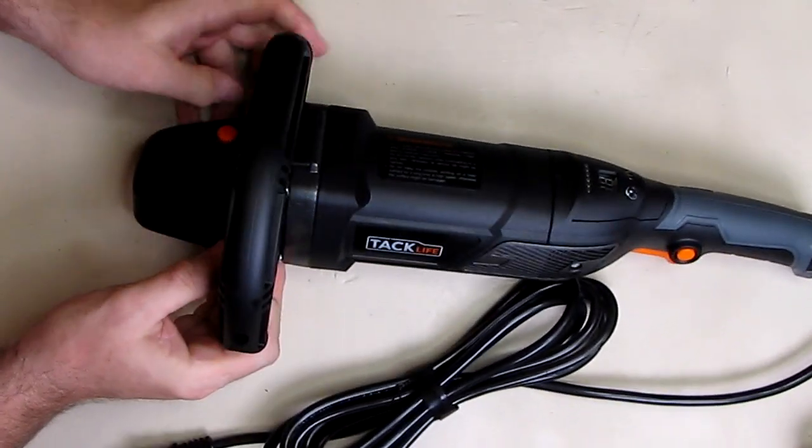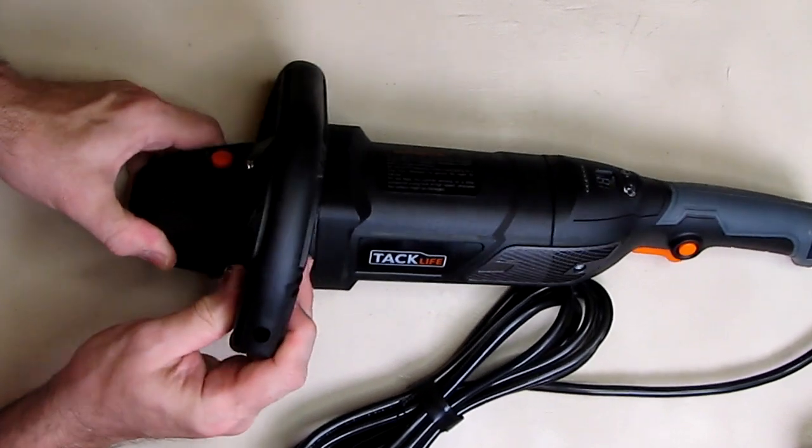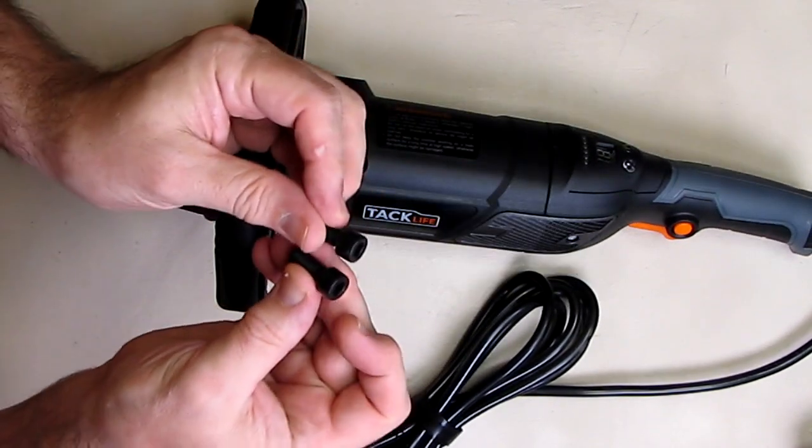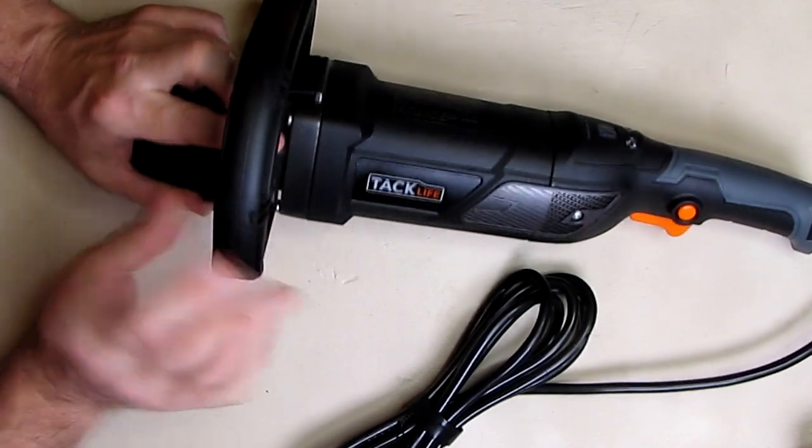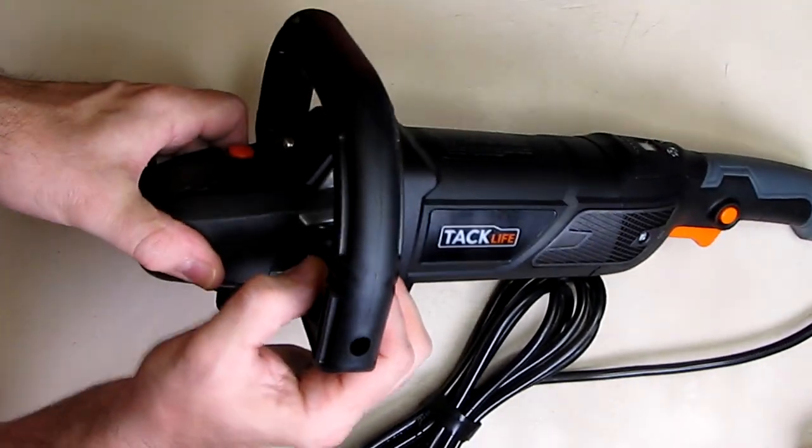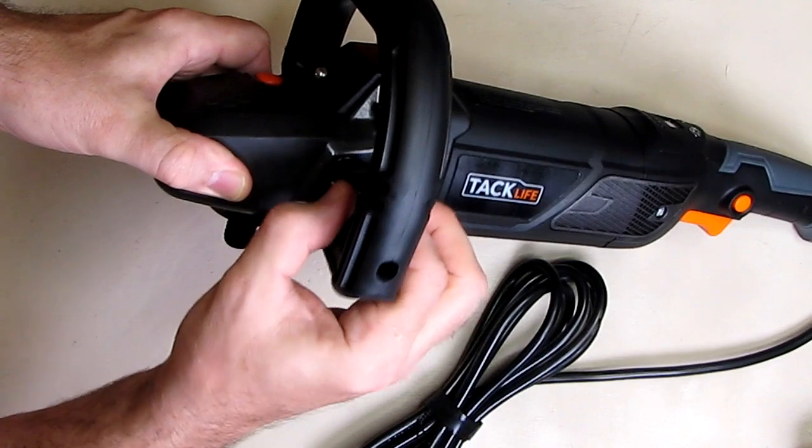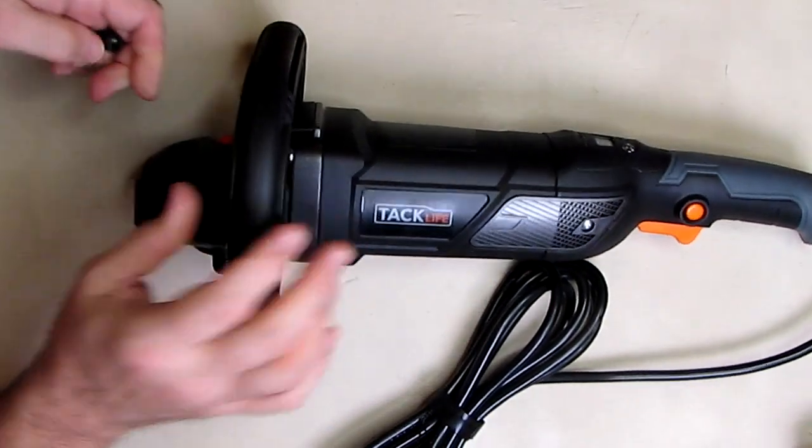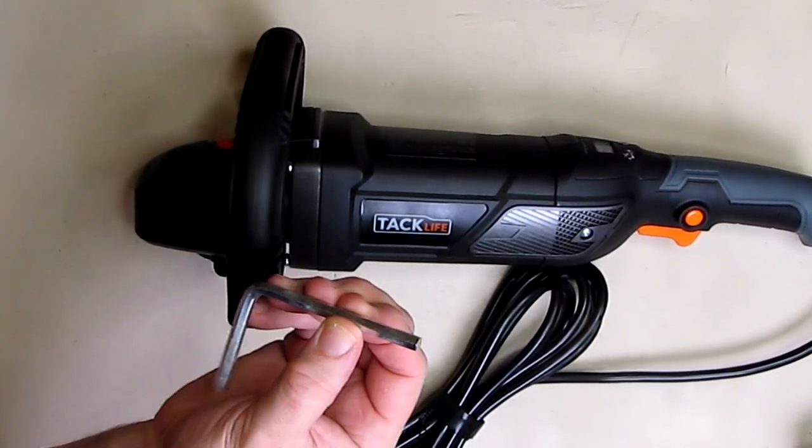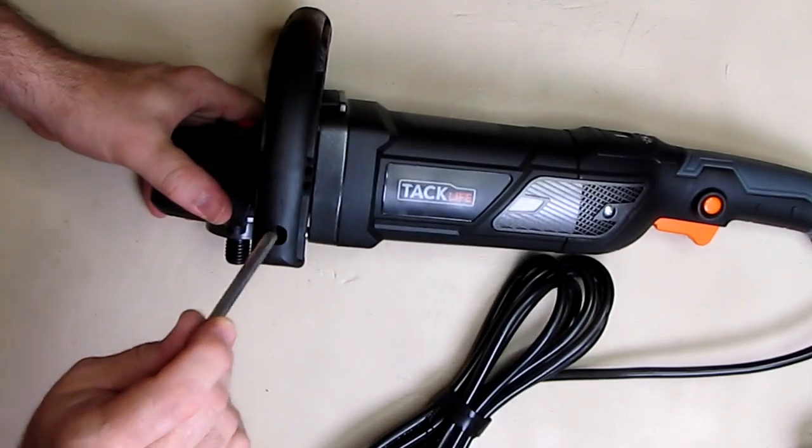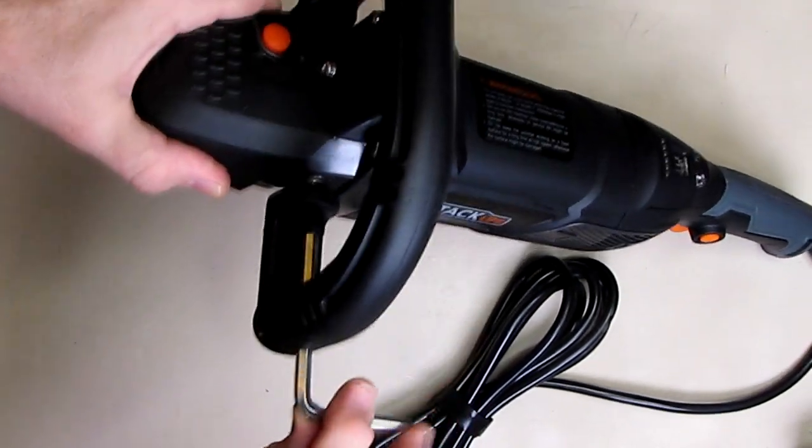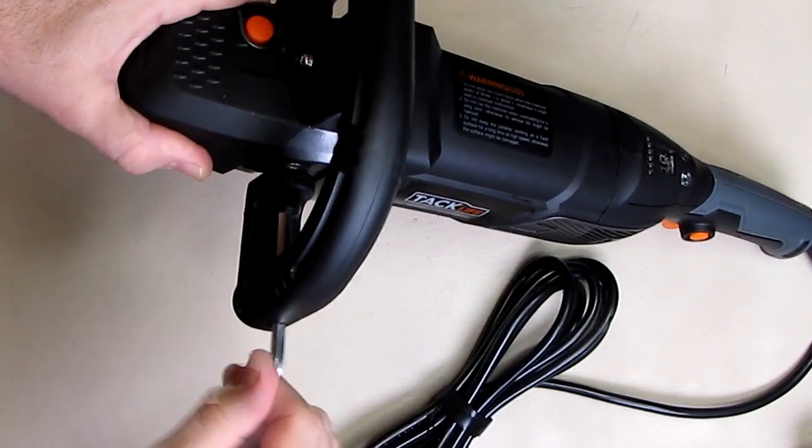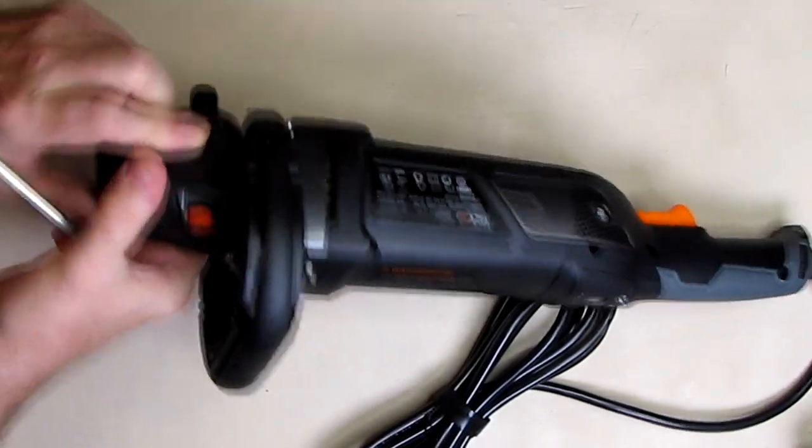It slides over and you line up the holes, and it includes the very solid bolts in there. So we're going to line that up and put that in. We're just going to turn it by hand initially just like that. Then the tool, as I mentioned, includes a wrench. They cleverly put a hole right there so that you could turn that and tighten that handle.